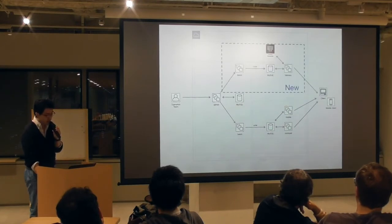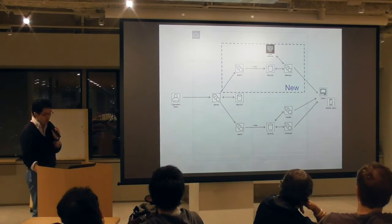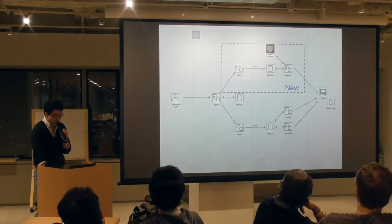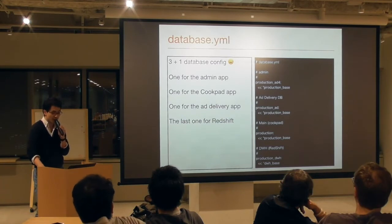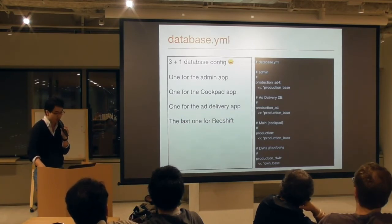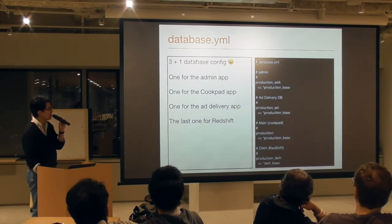Here is a newer version for delivering ads. We have an independent ad delivery system — the ad logic is extracted from the CookBat application. There are additional batch jobs to write delivery plans to another MySQL. The thing is, the database YAML of the admin app has four database configurations: one for its own admin app, one for CookBat, one for the new ad delivery app, and the last one for Redshift, which is our data warehouse platform.